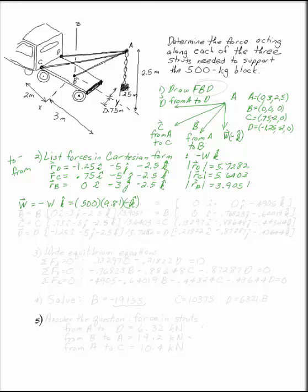Remember, you cannot say 500 because that would be a mass and not a weight or a force. This is 0 in the i direction plus 0 in the j direction minus 4,905 in the k direction.